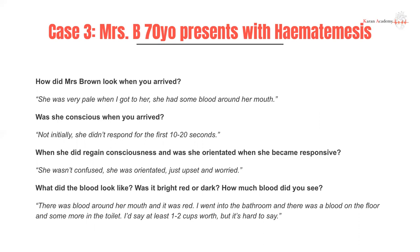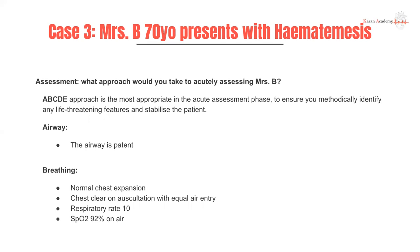On examination, she looks very pale and has some blood around her mouth. She was not initially conscious when she arrived and didn't respond for the first 10 to 20 seconds. When she regained consciousness, she was oriented — not confused — which is important because we worry about reduced GCS with liver issues and encephalopathy. The blood was bright red and the son reported blood all over the floor — at least one to two cups worth.